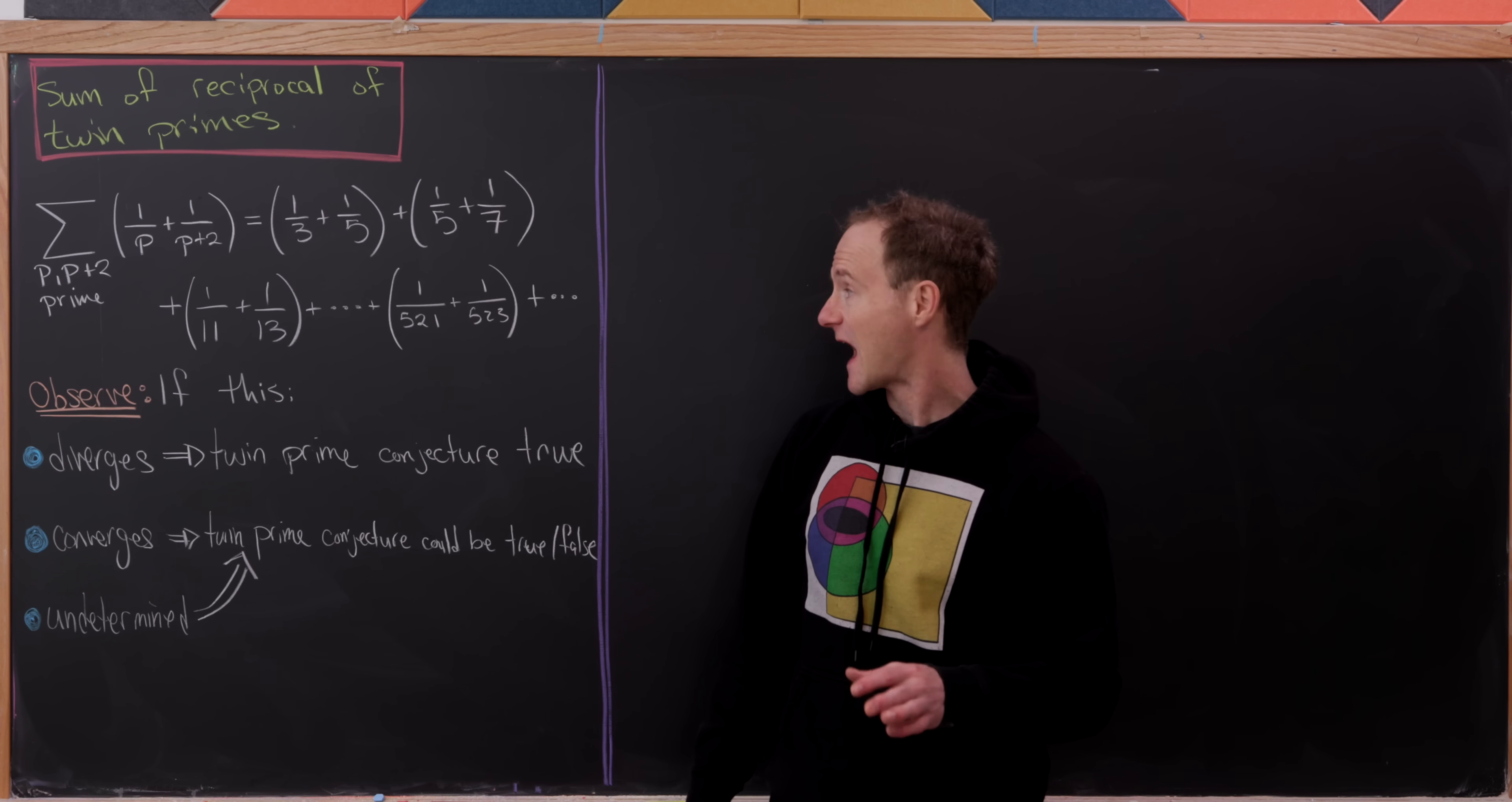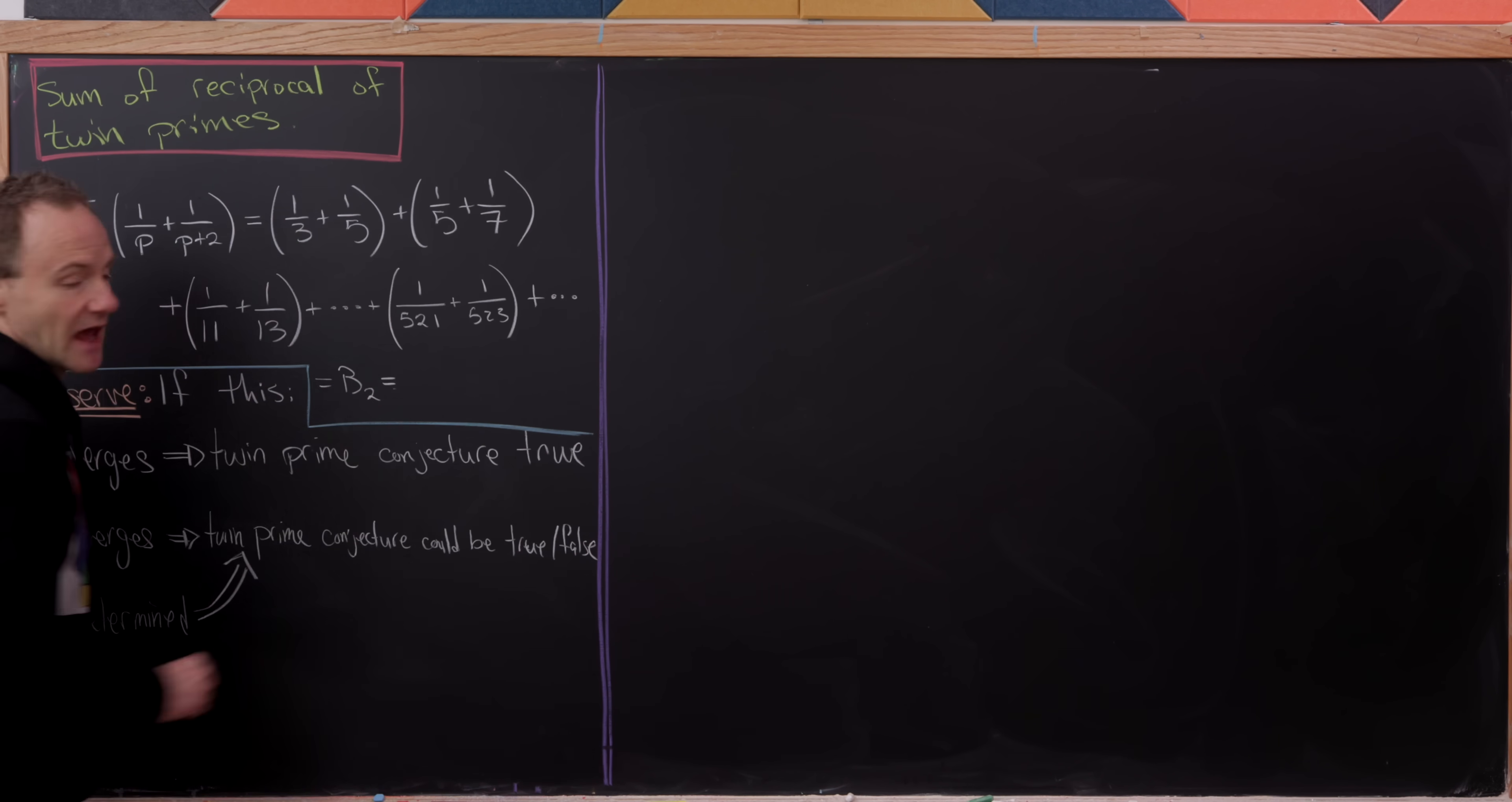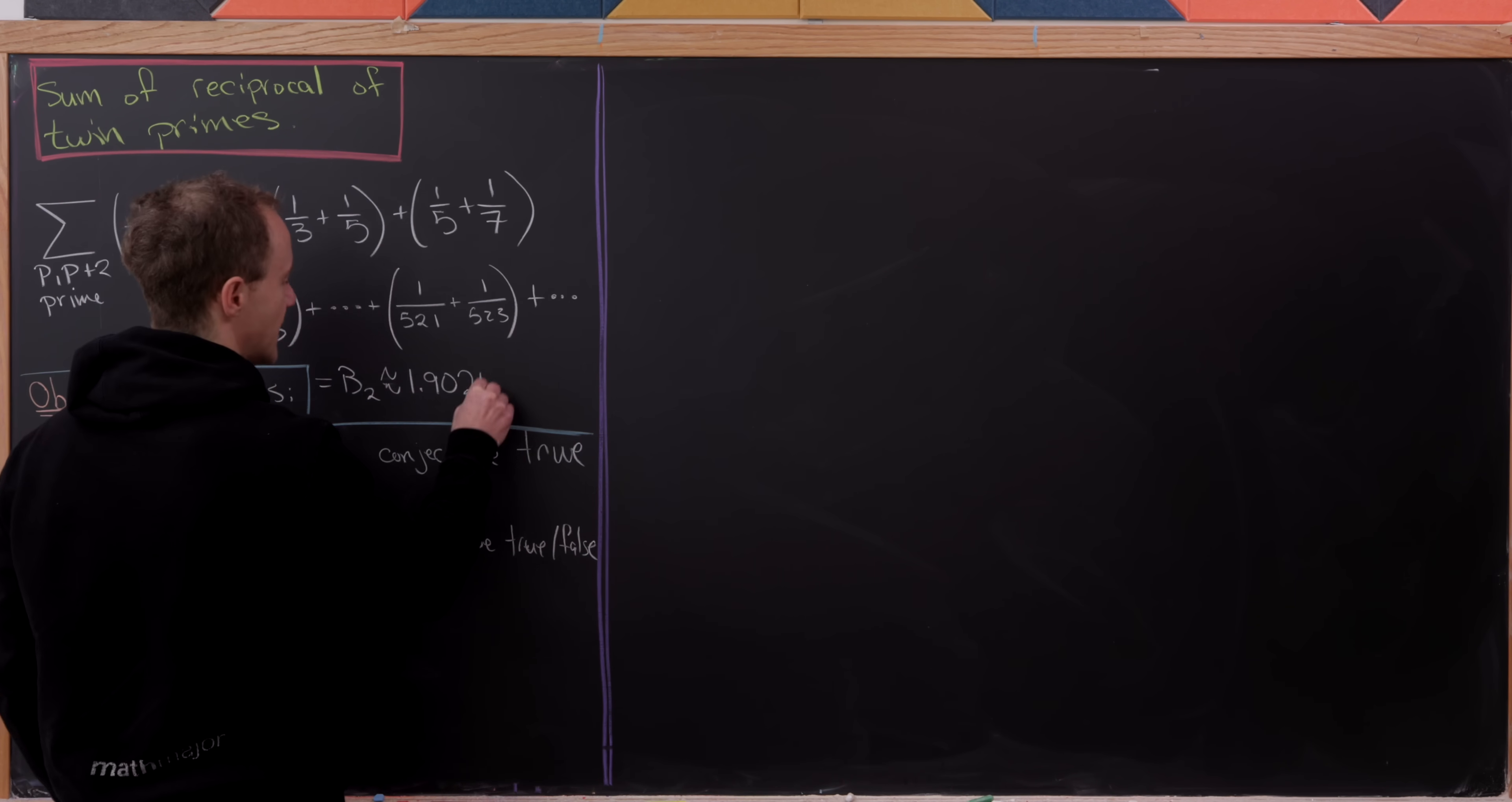Is it undetermined whether or not this thing converges or do we know if it converges? Well in fact we know that this does converge. And it converges to something called Brun's constant and it's denoted by b sub 2. And its first couple of terms go like this. I should say this is approximately equal to 1.90216.